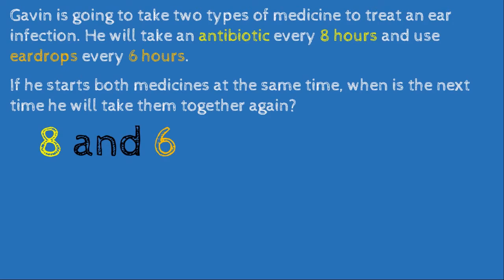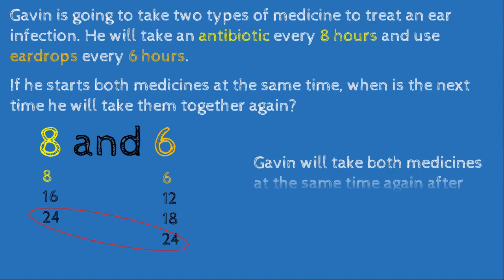We consider the numbers 8 and 6. Finding multiples of 8: 8, 16, 24. Multiples of 6: 6, 12, 18, 24. The least common multiple is 24, so Gavin will take both medicines at the same time again after 24 hours. This is how the least common multiple is useful in the real world.